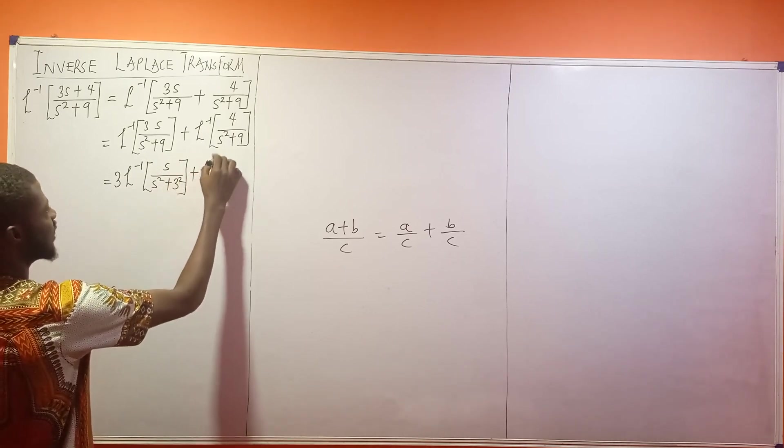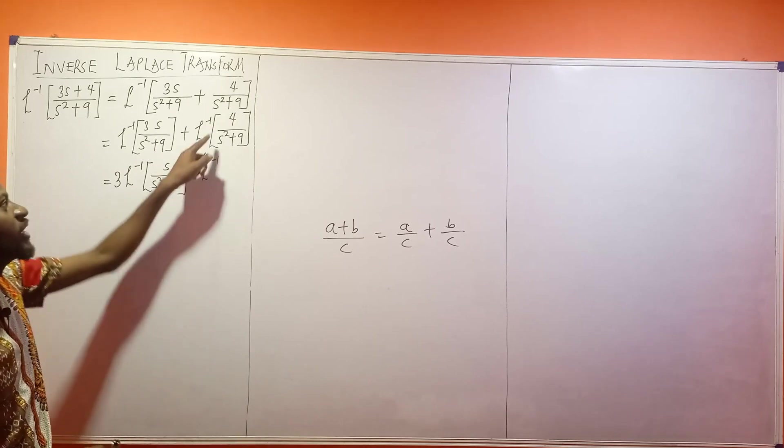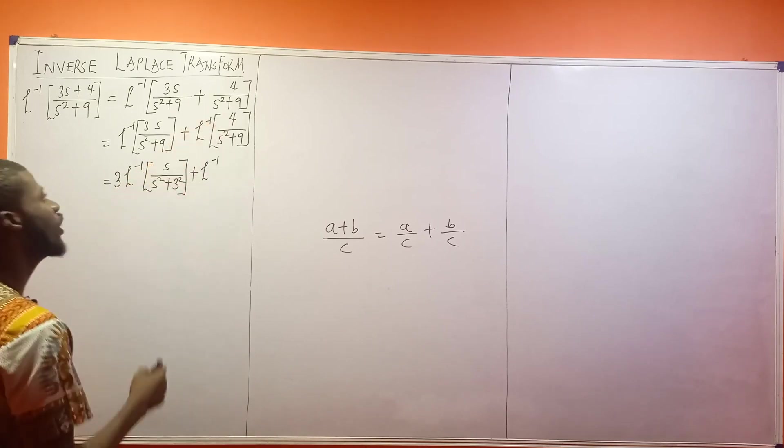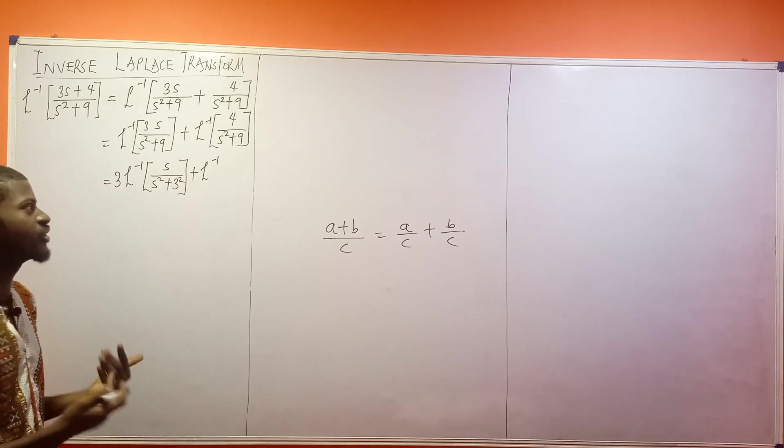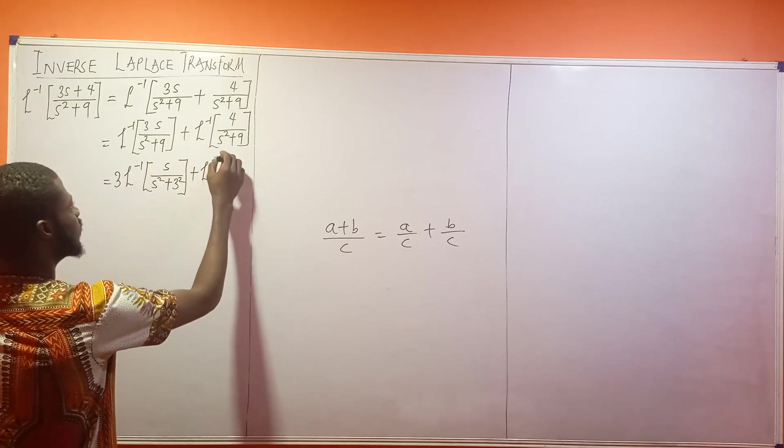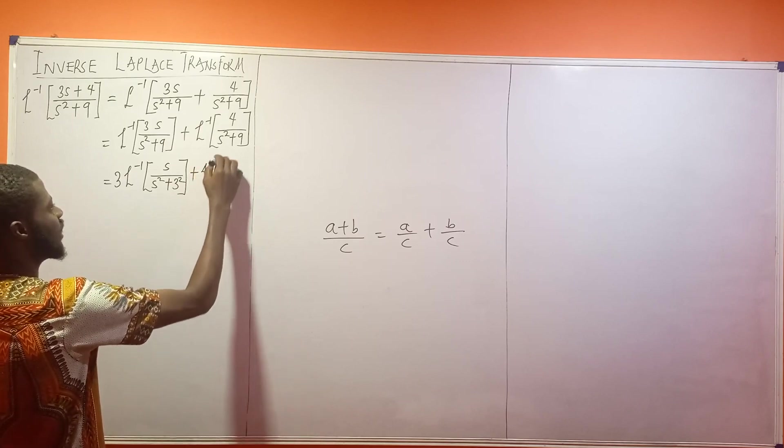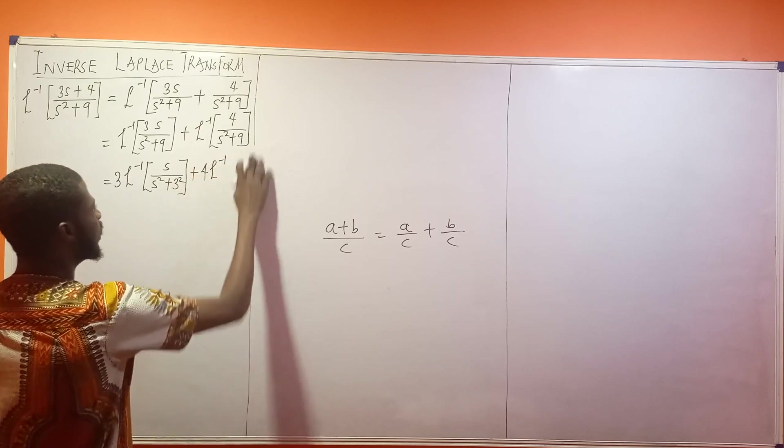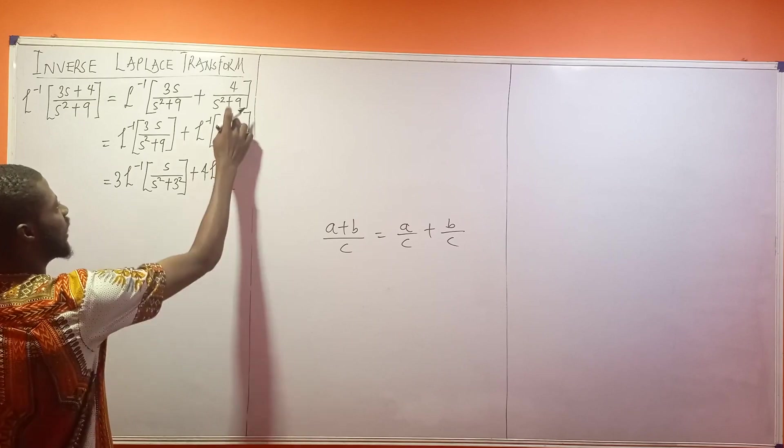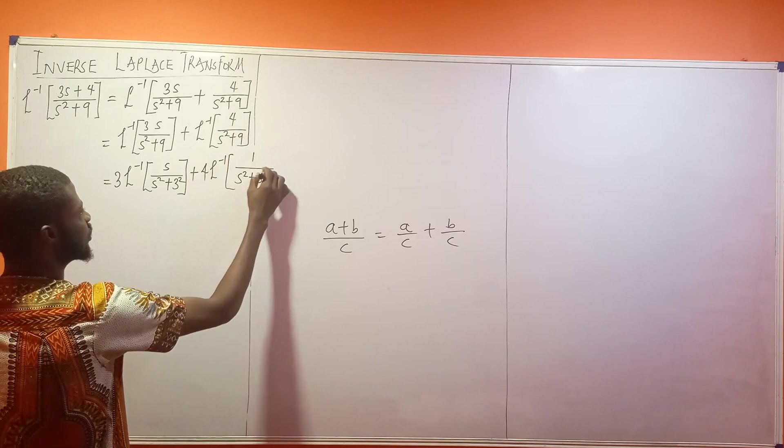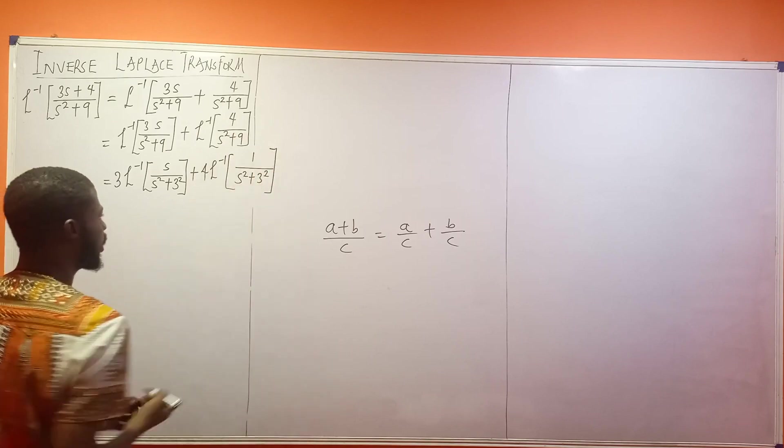Plus inverse Laplace of, now look at this very 4 guy. This very 4 that you're seeing here, you can still bring it out if you wish to. So let me just do it. So this is 4, inverse Laplace of, the expression will then become, what will be left here? 1 divided by what? s squared plus 9 is 3 squared.